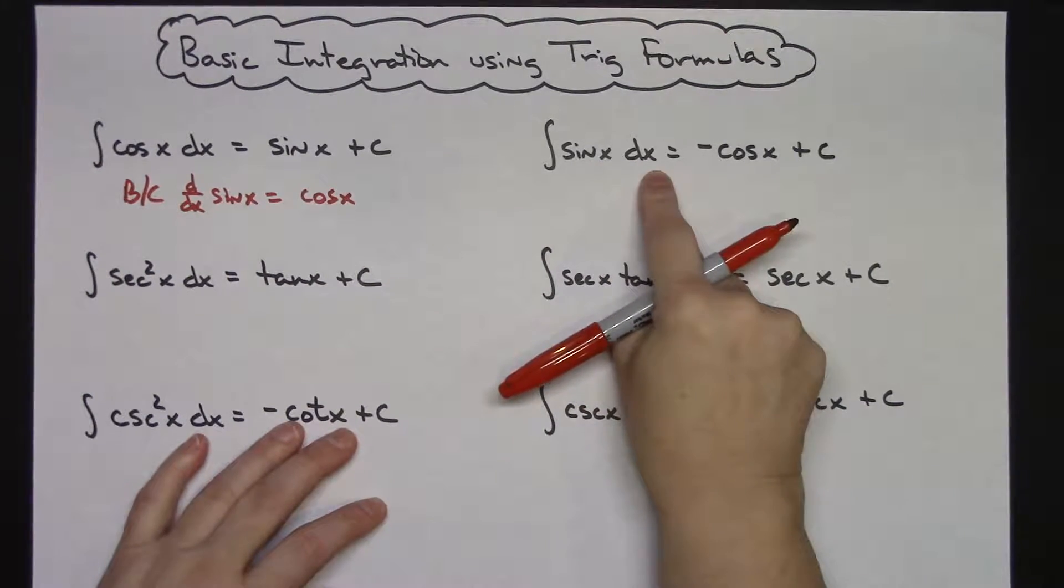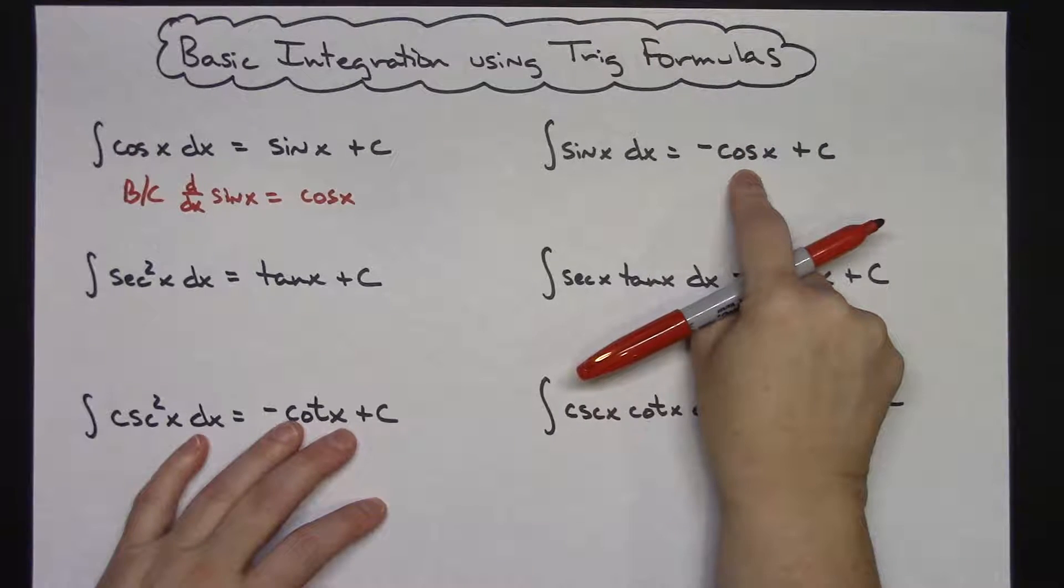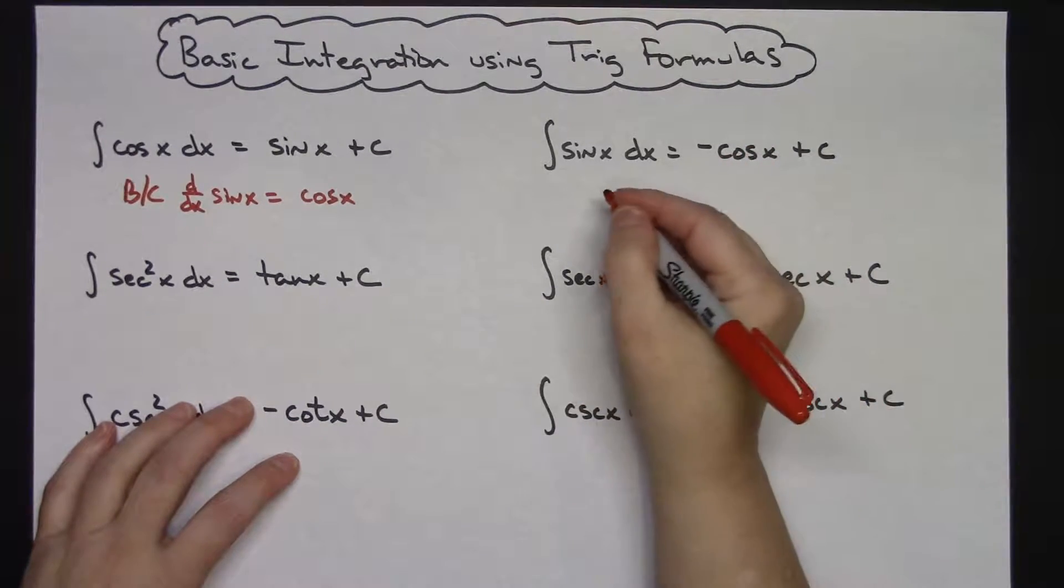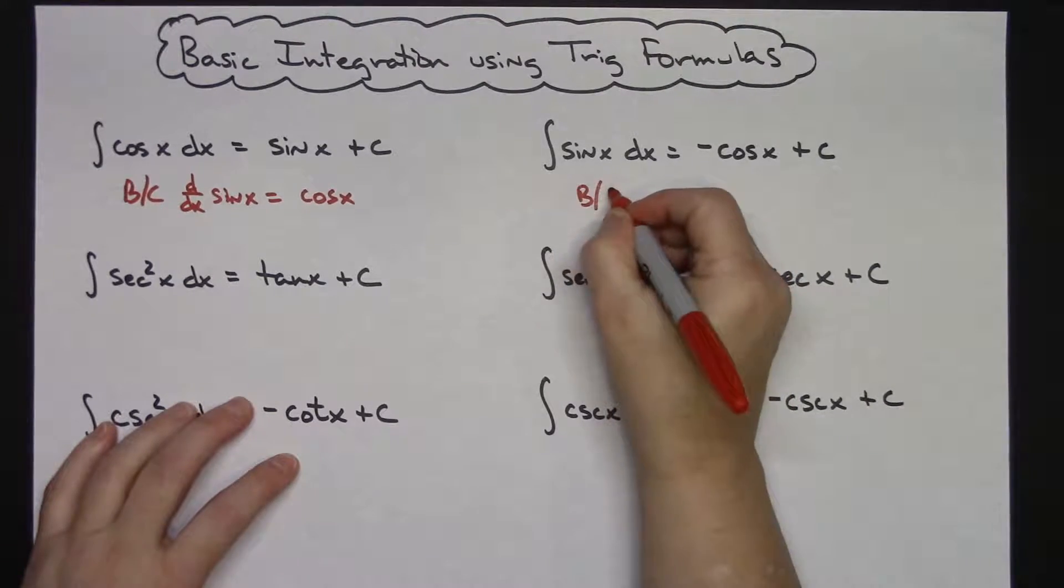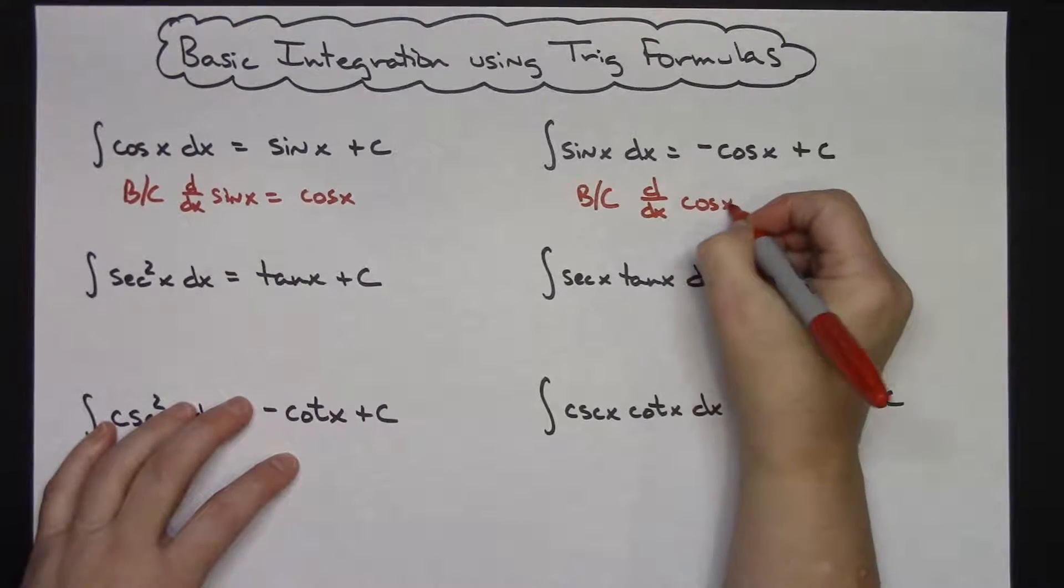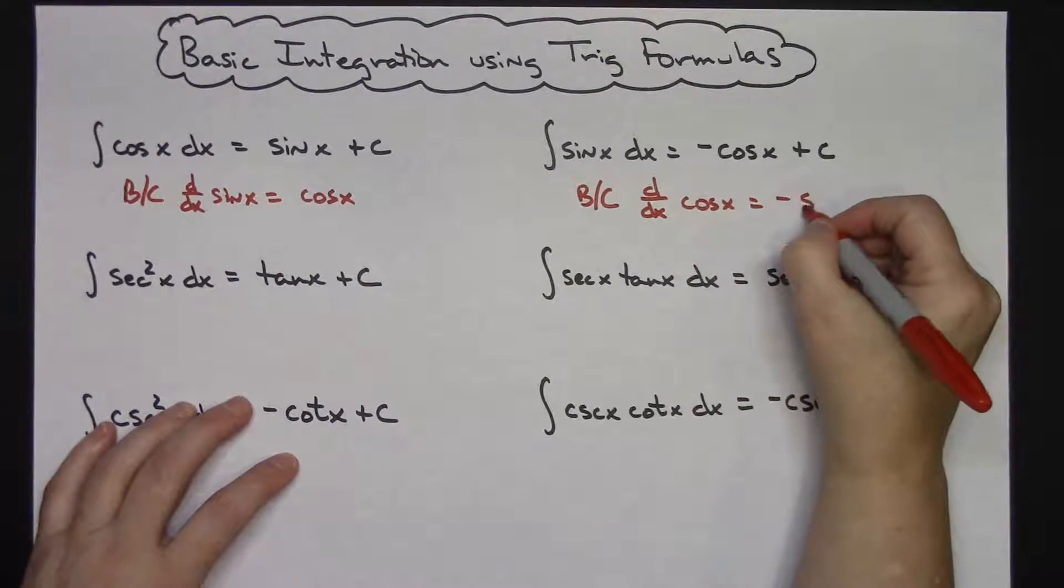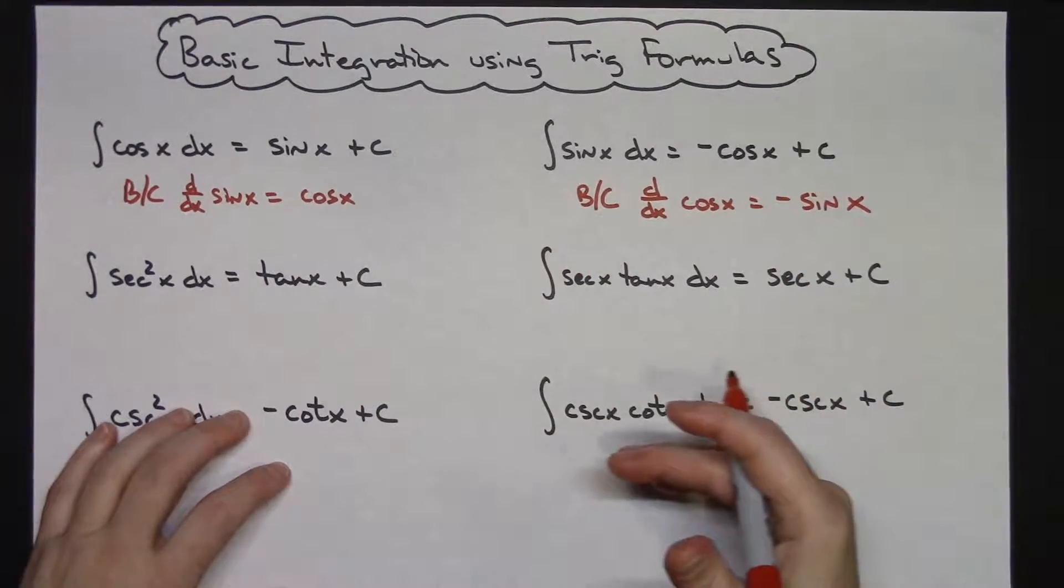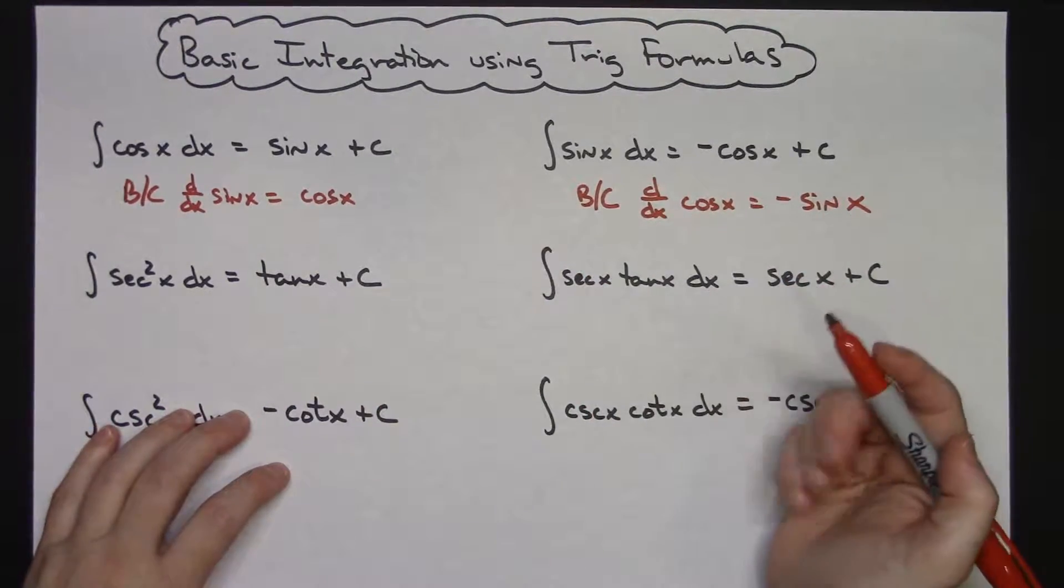If I integrate sine x dx, I'm going to get negative cosine x plus c. And there again, that is because the derivative d/dx of cosine x is equal to negative sine x. So each one of these are because of our derivative rules.